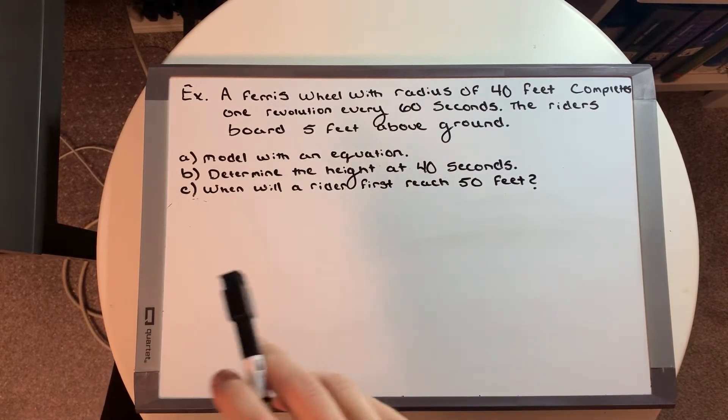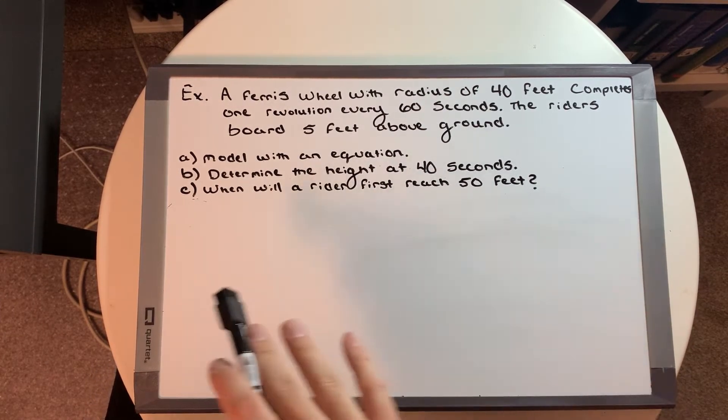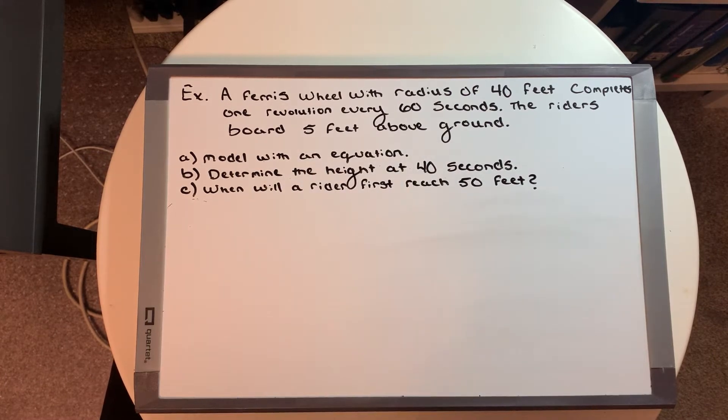Okay, so we're going to go through a problem that states a Ferris wheel with a radius of 40 feet completes one revolution every 60 seconds. The riders board five feet above the ground.